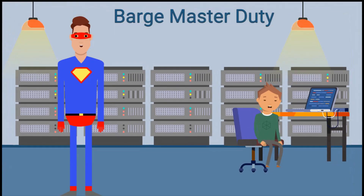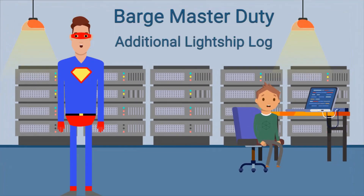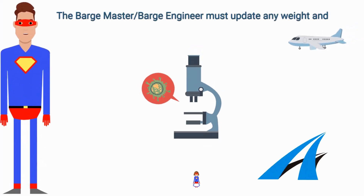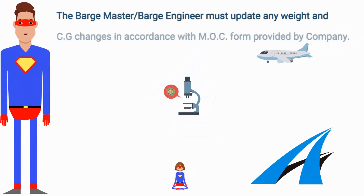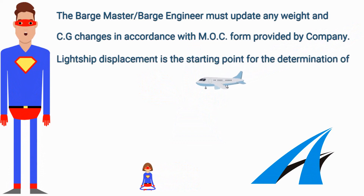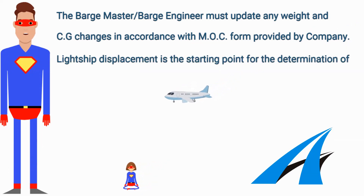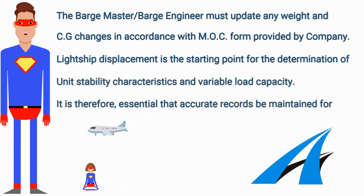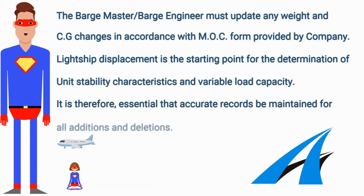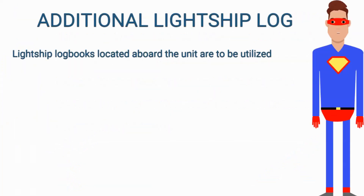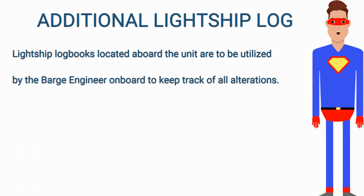If you are the barge master or barge engineer, this is part of your duty to keep the additional lightship log. The barge master or barge engineer must update any weight and center of gravity changes in accordance with the MOC form provided by the company. Lightship displacement is the starting point for the determination of unit stability characteristics and variable load capacity. It is therefore essential that accurate records be maintained for all additions and deletions.